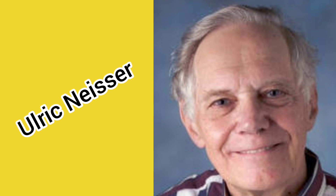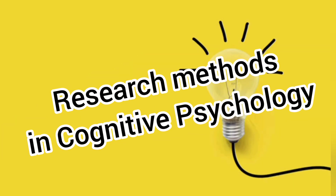Ulrich Neisser is known for his great contribution — the very first book of cognitive psychology, published in 1967. Research methods in cognitive psychology include laboratory or other controlled experiments, neuroscientific research, self-reports, case studies, naturalistic observation, and computer simulations and artificial intelligence. Cognitive psychologists use various methods to explore how humans think.